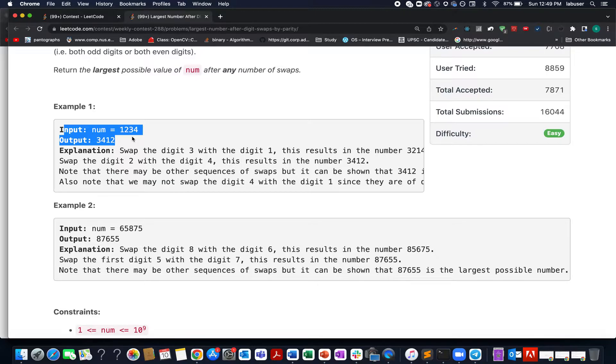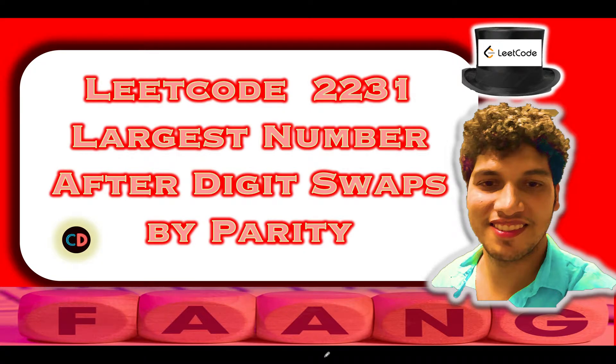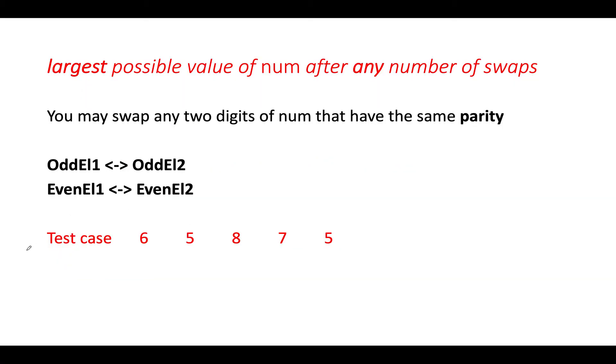They have provided us a few examples. I will be walking you through this example as well as the algorithm. Let's quickly hop on to it: LeetCode 2231, Largest Number After Digit Swap by Parity. In case if you have any doubt understanding this question or want to ask anything, please feel free to join the Telegram group of Coding Decoded or the Discord server. The links are mentioned in the description below.